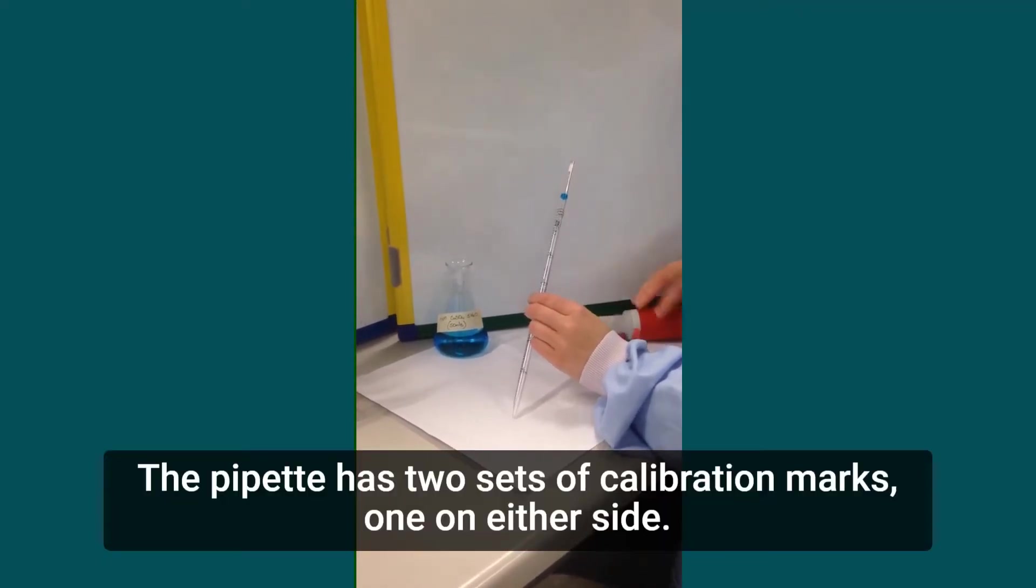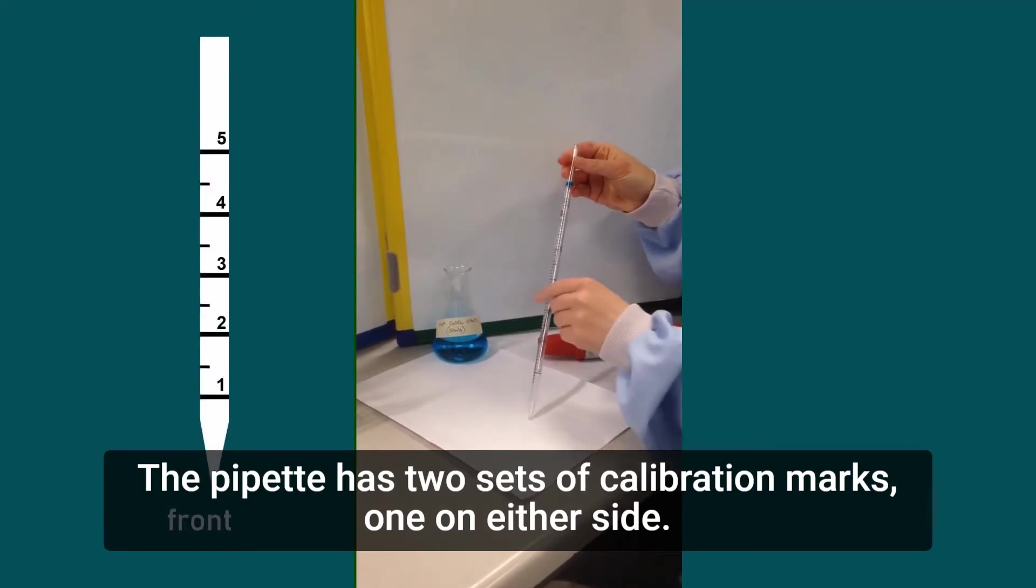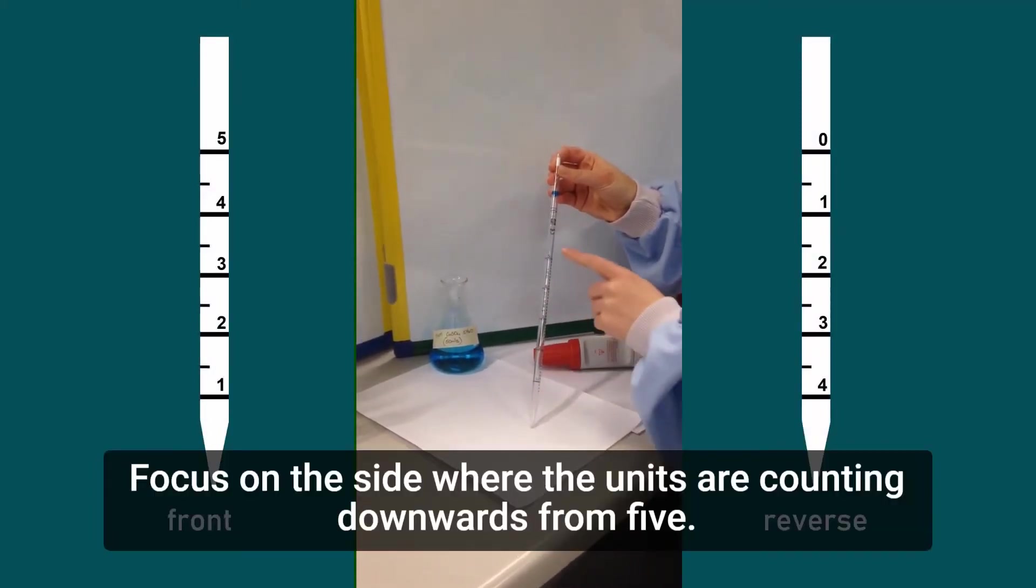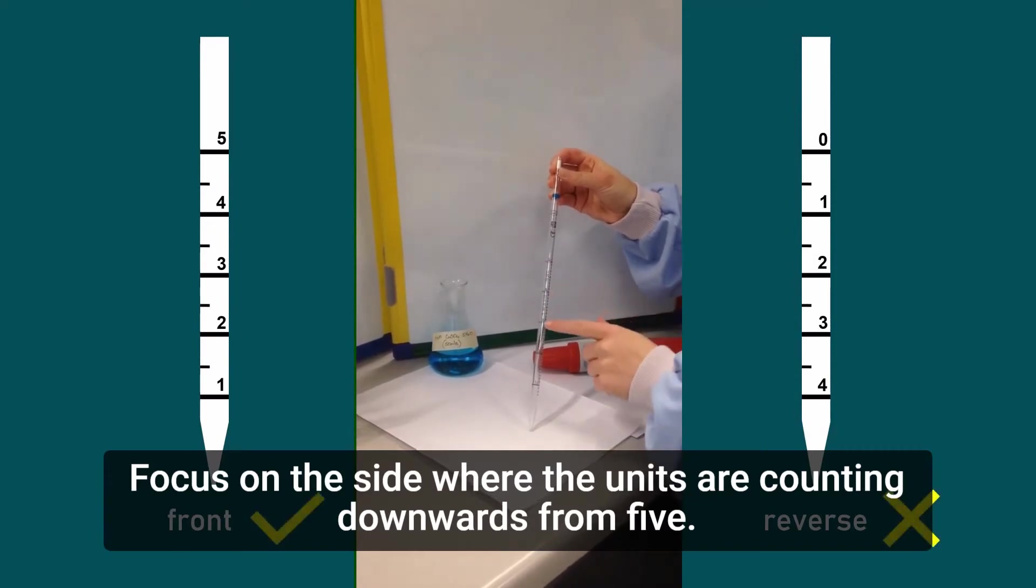The pipette has two sets of calibration marks, one on either side. Focus on the side where the units are counting downwards from 5.